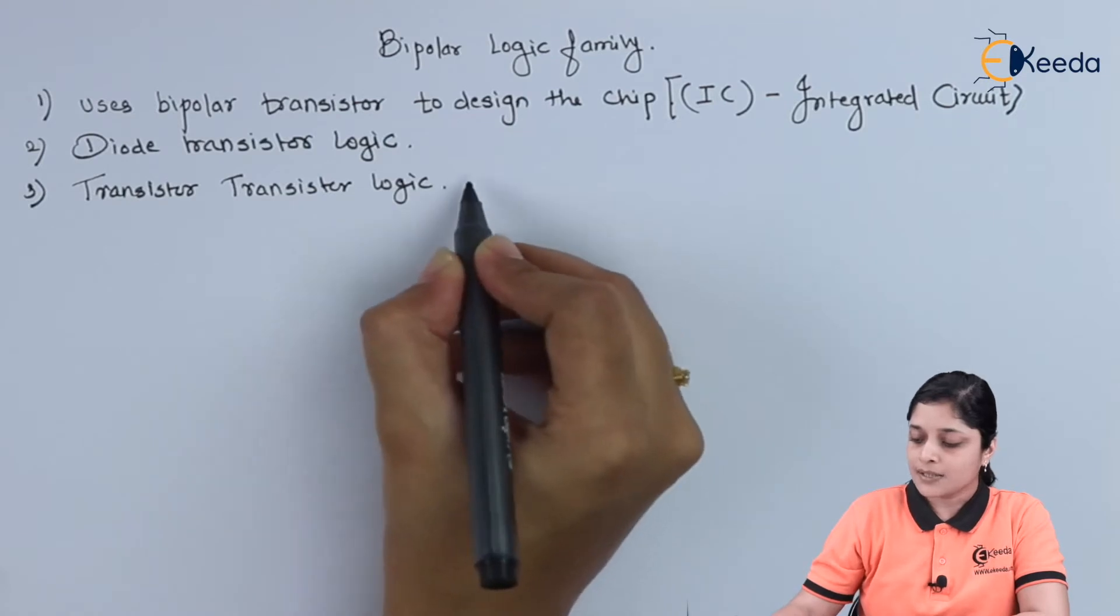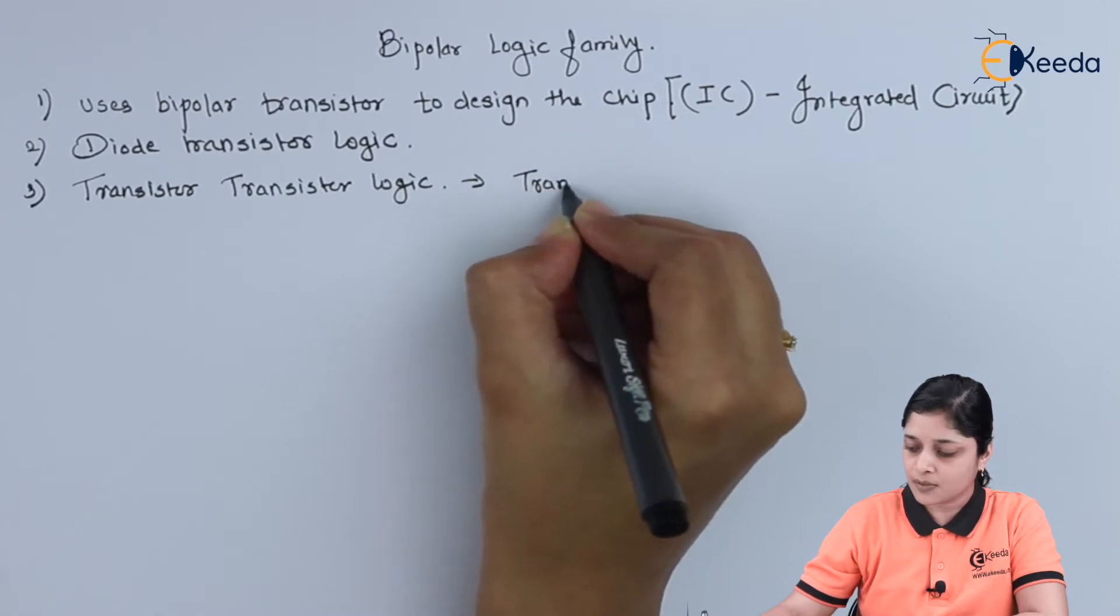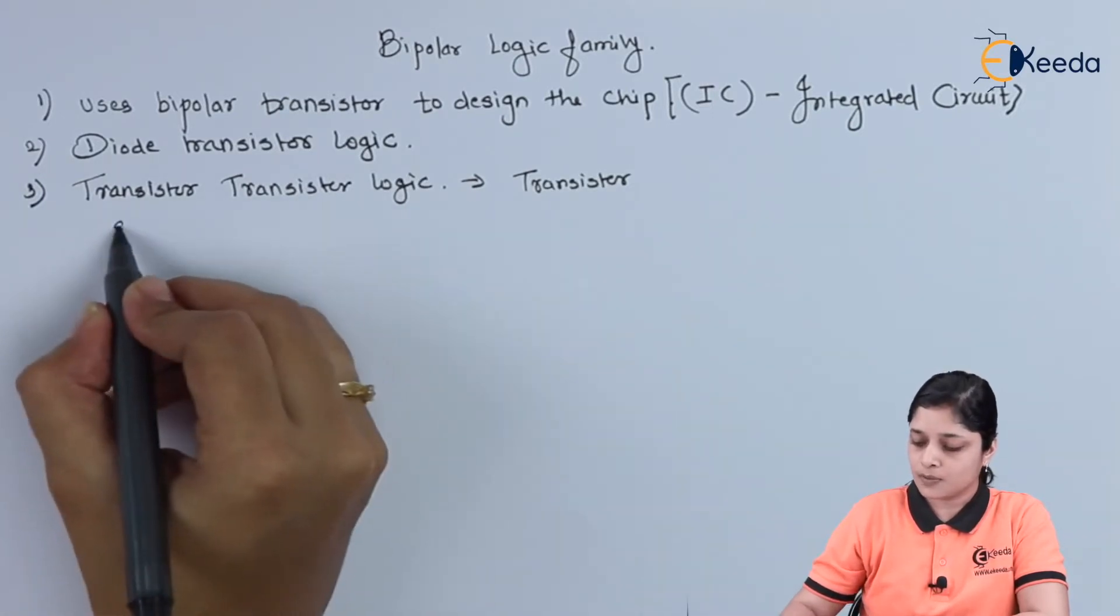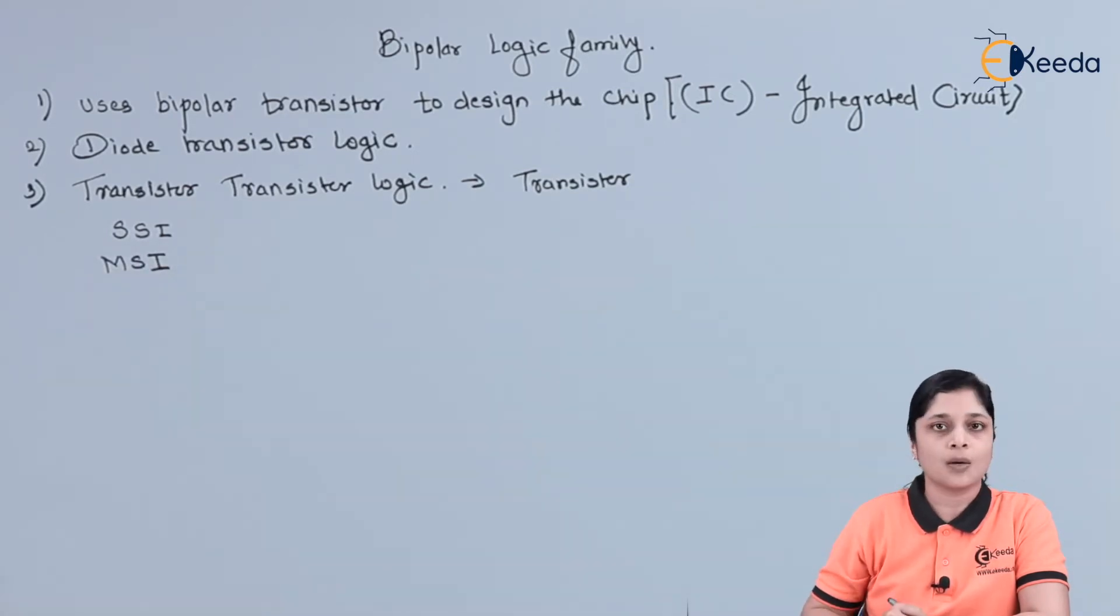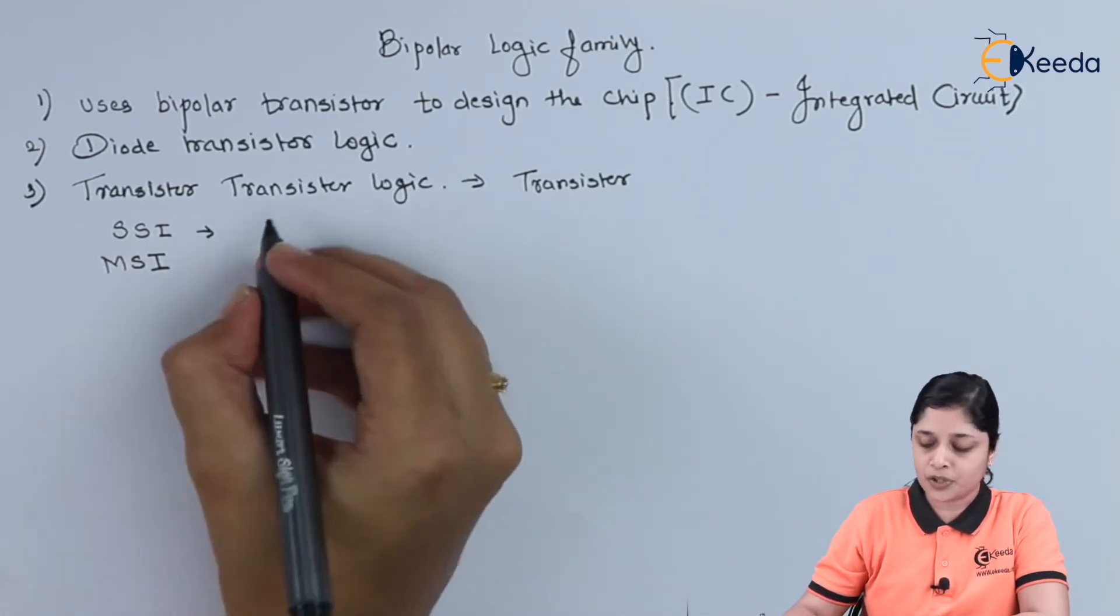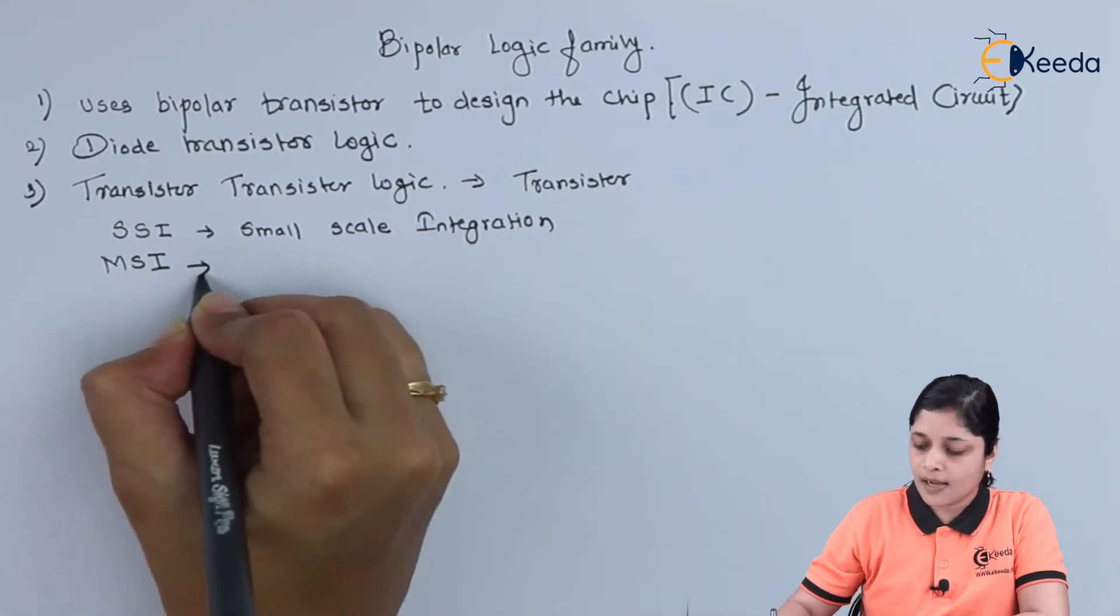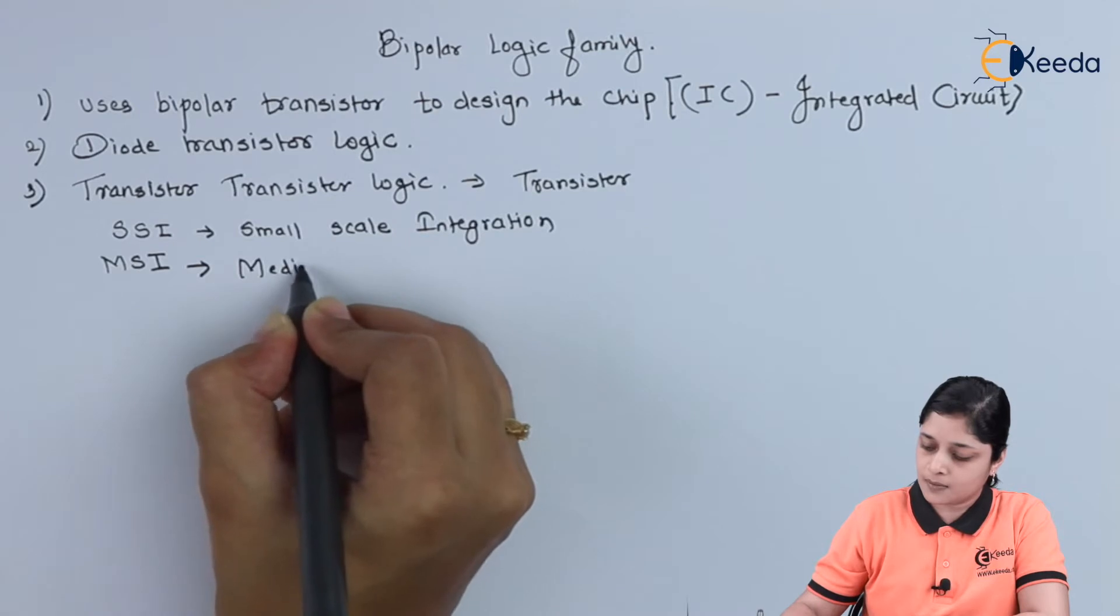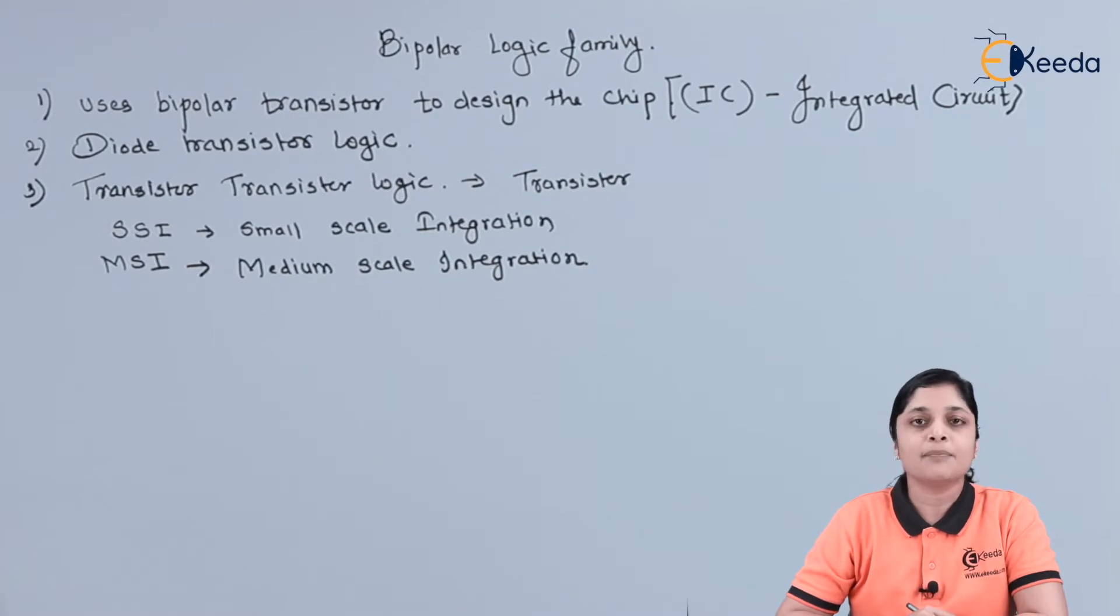This transistor-transistor logic consists of a very important element, that is transistor. They are used to design SSI and MSI technology components. Long form of SSI is small scale integration and long form of MSI is medium scale integration, and these Bipolar Logic families